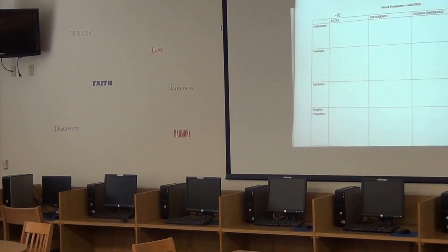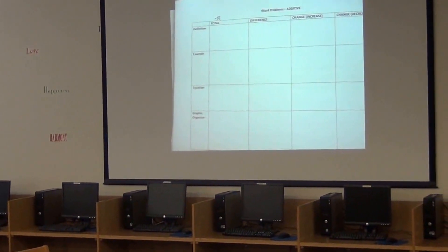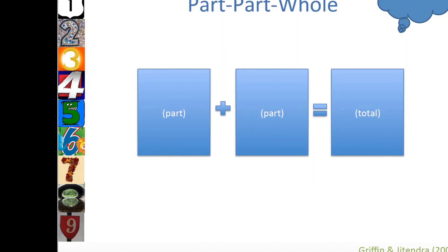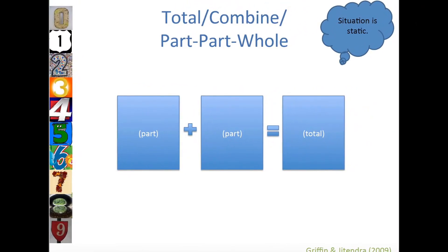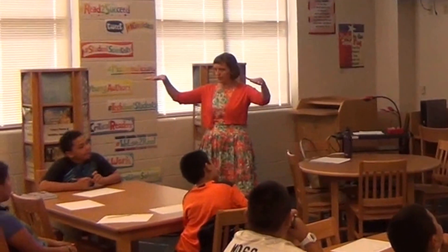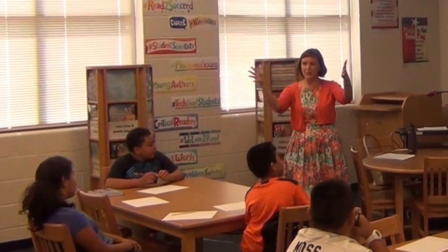We'll put all of that together and solve a total problem altogether. In a total problem, you have parts, and those parts are put together for a total. So in a total problem, we have parts put together for a total. Say that with me: parts put together for a total.